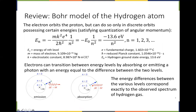When an electron jumps from a high energy state like N equals 3 down to N equals 2, the energy it loses is emitted as a photon. In this case, we are not talking about energy given off as heat but rather as light or photons. The opposite process — absorption — occurs when an electron on a lower energy level gets hit by a photon with exactly the right energy to jump to a higher orbit.